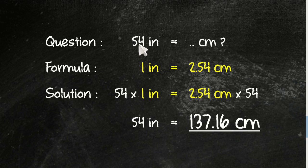To make an equation, you need to put 54 here and 54 here as well. 54 times 1 equals 54, and 2.54 centimeters times 54 equals 137.16 centimeters. That's the answer.